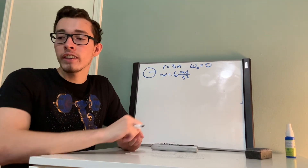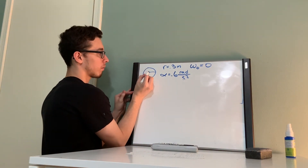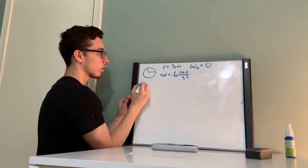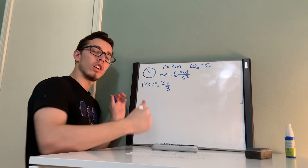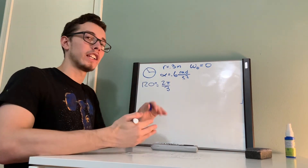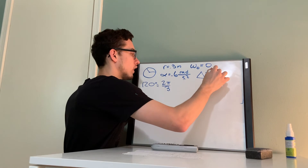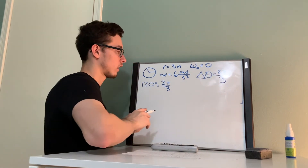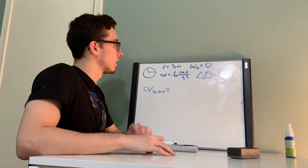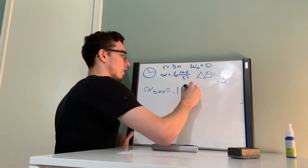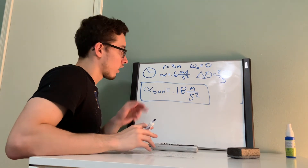For the last part, they tell us the flywheel has turned through 120 degrees, which is in the second quadrant. That's also equal to 2π/3 radians, so delta theta is 2π/3 radians. They want us to find the tangential acceleration. Like I said, that doesn't change: 0.6 times 0.3 is 0.18 meters per second squared. I told you that was going to be constant throughout the whole video.